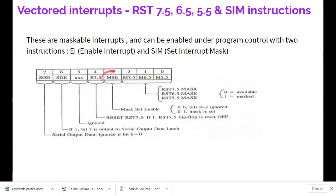Bit D3 is the MSE — Mask Set Enable. If you put zero here, whatever mask values you have set in D0–D2 will be ignored, even if an interrupt occurs. You must place a one in D3 to make the mask bits effective. Only when MSE equals one will the interrupt mask settings take effect.